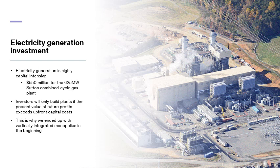Electricity generation is highly capital intensive — we're talking about building a new power plant. For example, $550 million for the 625 megawatt Sutton Combined Cycle gas plant. Investors will only build plants if the present value of the future profits exceeds upfront capital costs. This is why we ended up with vertically integrated monopolies in the beginning of electric power back in the early 20th century.